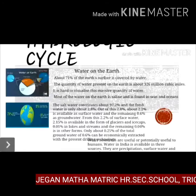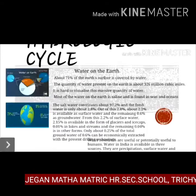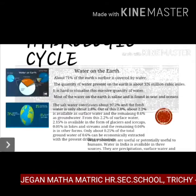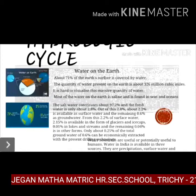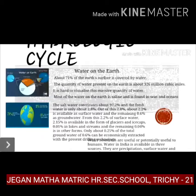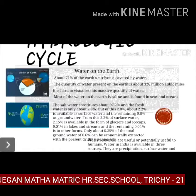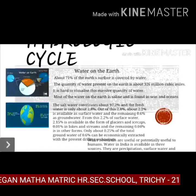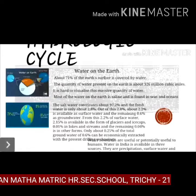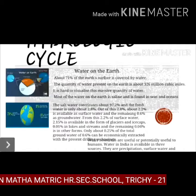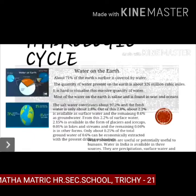Out of the 2.8 percent fresh water, about 2.2 percent is available as surface water and the remaining 0.6 percent as groundwater. From this 2.2 percent of surface water, 2.15 percent is available in the form of glaciers and ice caps, 0.01 percent in lakes and streams, and the remaining 0.04 percent in other forms. Only about 0.25 percent of total groundwater of 0.6 percent can be economically extracted with present drilling technology.